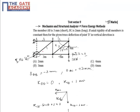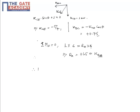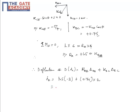So deflection at D would be KAB into delta AB plus KBC delta BC. So D is 1.5 into minus 3 plus 0.75 into 2, which comes out to be minus 3 mm upwards.